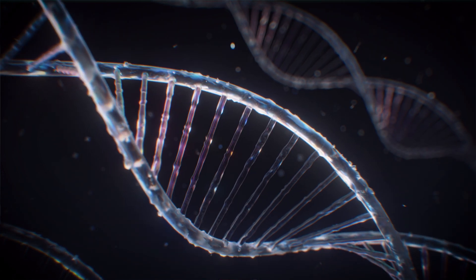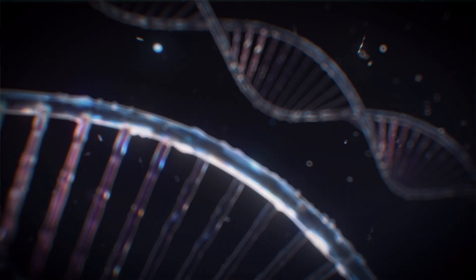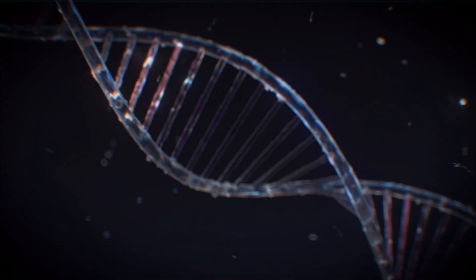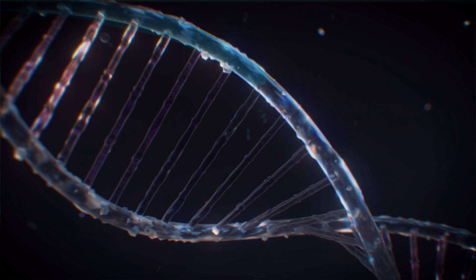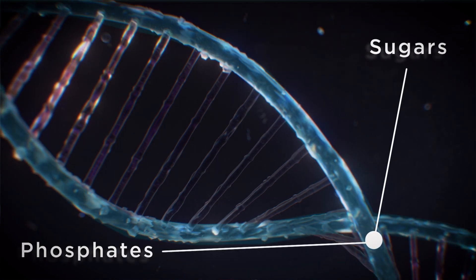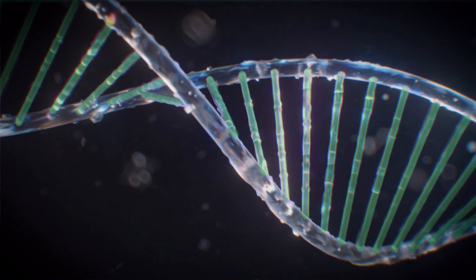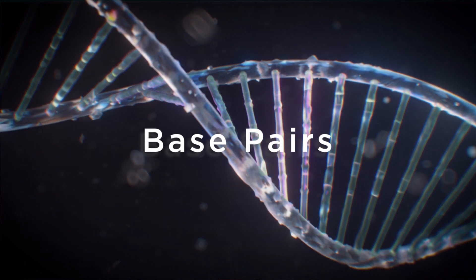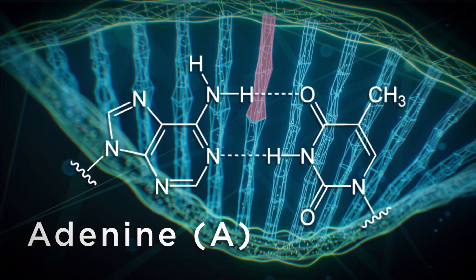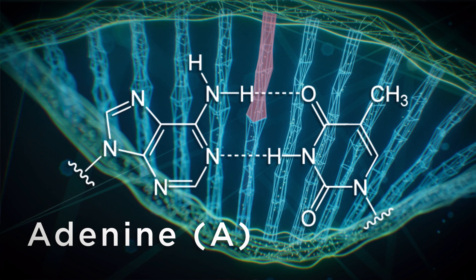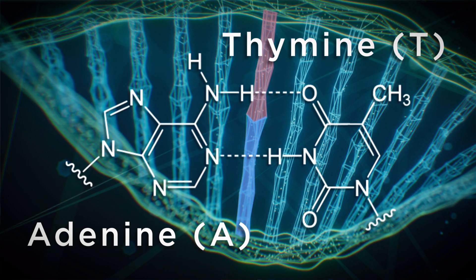An astonishingly elegant and ingenious molecule, DNA looks a bit like a spiral staircase, the rails of which are composed of sugars and phosphates. The steps connecting the sides are called base pairs, either a pairing of adenine, A, and thymine, T,